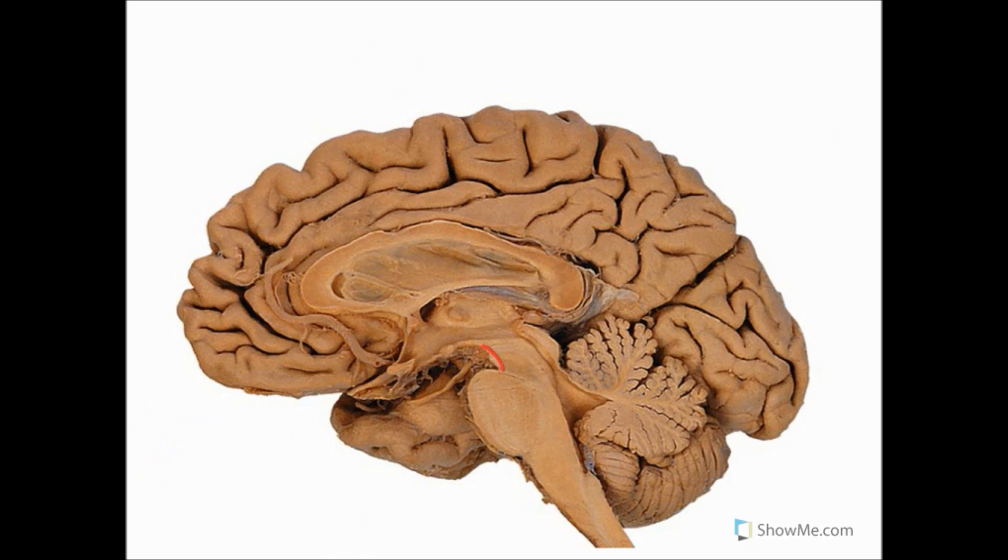Then next we have the hard to miss brain stem, which is divided into three parts. We have most superiorly, our midbrain. Then in the middle we have our great big fat pons. And then most inferiorly, just here, we have our medulla oblongata.